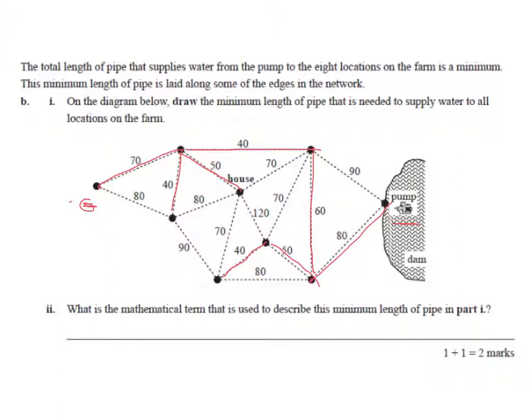Part two, what is the mathematical term that is used to describe the minimum length in part one? Well, we've already said that. That's a minimal spanning tree. Be really careful that you are specific with the language. Don't get confused about different things. Some common mistakes, we're calling it a max flow or a minimum cut. Be really clear that you know what it is that you're talking about. And in this case, where we've created the smallest possible spanning tree, that's our minimal spanning tree. Hope that's helped.